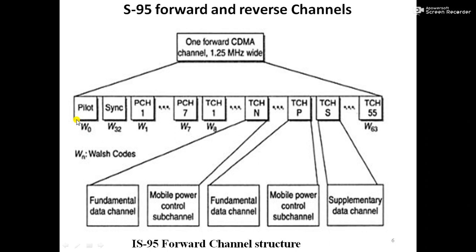The Walsh-Hadamard code is used as a continuous signal on a single channel. The pilot channel allows the mobile phone to acquire timing information, provides a phase reference for the demodulation process, and provides a means for signal strength comparison for handoff determination. The pilot channel consists of all logical zeros. The synchronization channel is channel 32. It has low-rate data that is convolutionally encoded and interleaved before being spread by the Walsh-Hadamard code. It is a 1200 bps channel used to obtain identification information about the system.